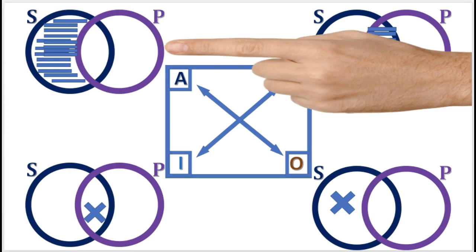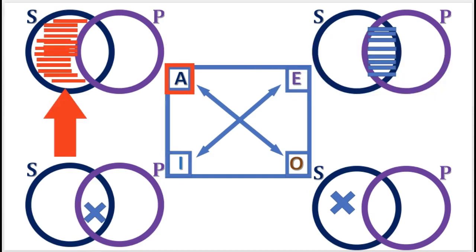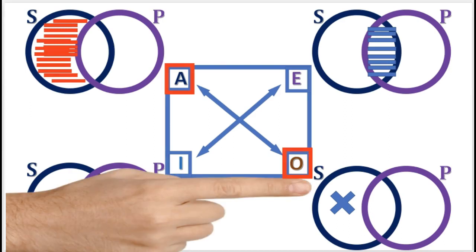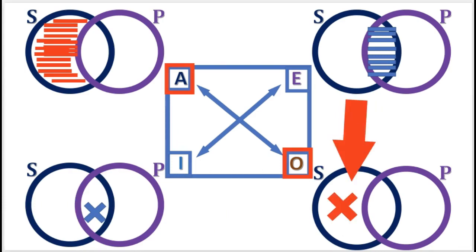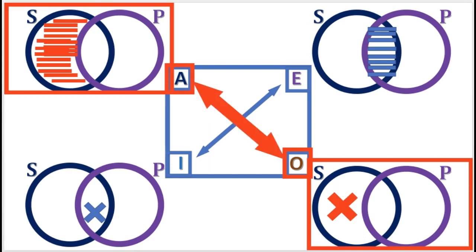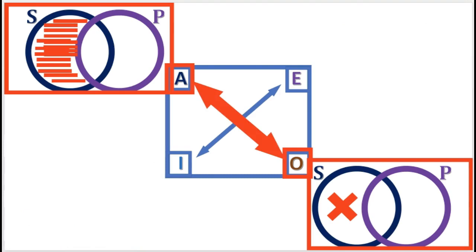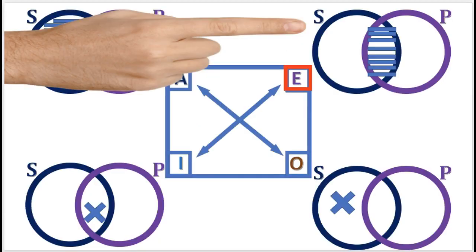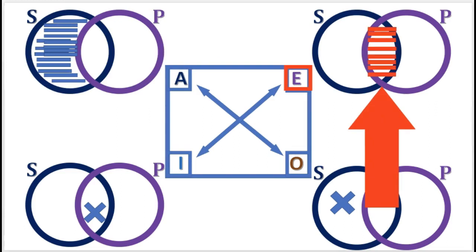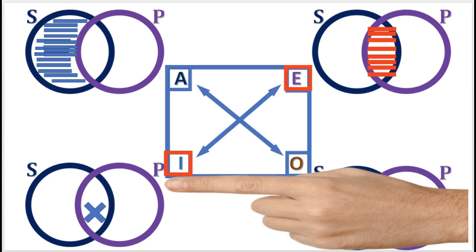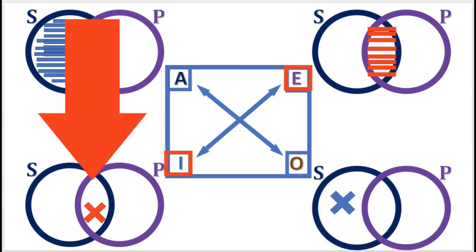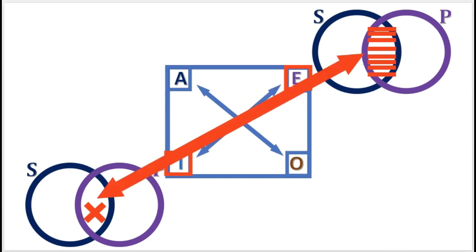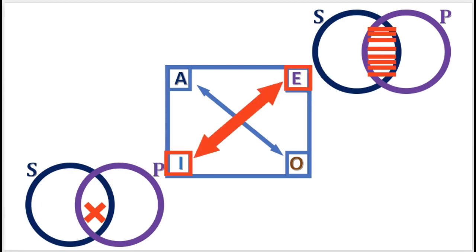Now look at the Venn diagram for the A and O propositions. The diagram for the A proposition asserts that the left-hand part of the S circle is empty. But on the other hand, the diagram for the O proposition asserts that the left-hand part of the S circle is not empty. So these two diagrams are exactly opposite of each other, which means that the A and O propositions contradict each other. Next, let's look at the Venn diagrams for E and I propositions. The diagram for the E proposition asserts that the overlap area is empty, but the diagram for the I proposition asserts that the overlap area is not empty. Once again, we see that these two diagrams are exactly opposite of each other, and this means that the E and I propositions contradict each other.